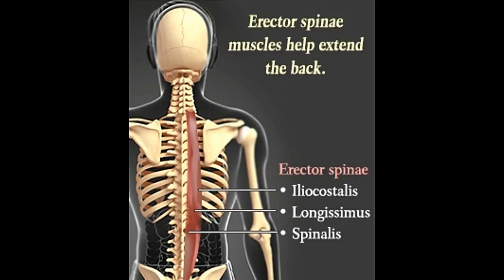A vital part of human anatomy, muscles are soft tissues that facilitate locomotion. They allow us to change or maintain posture. The ability of the human spine to bend forward or backward, rotate, or twist is attributed to several layers of muscles that support the back. The erector spinae muscles, also referred to as the sacrospinal muscle group, is one such muscle group that primarily acts as an extensor.